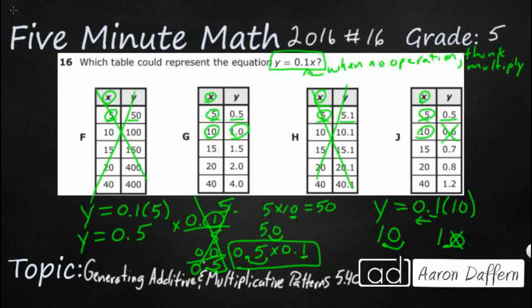So yeah, we can take this 15. Look, we multiply by one-tenth, we get 1.5. Multiply that 20 by one-tenth, we get 2.0. My answer is g.